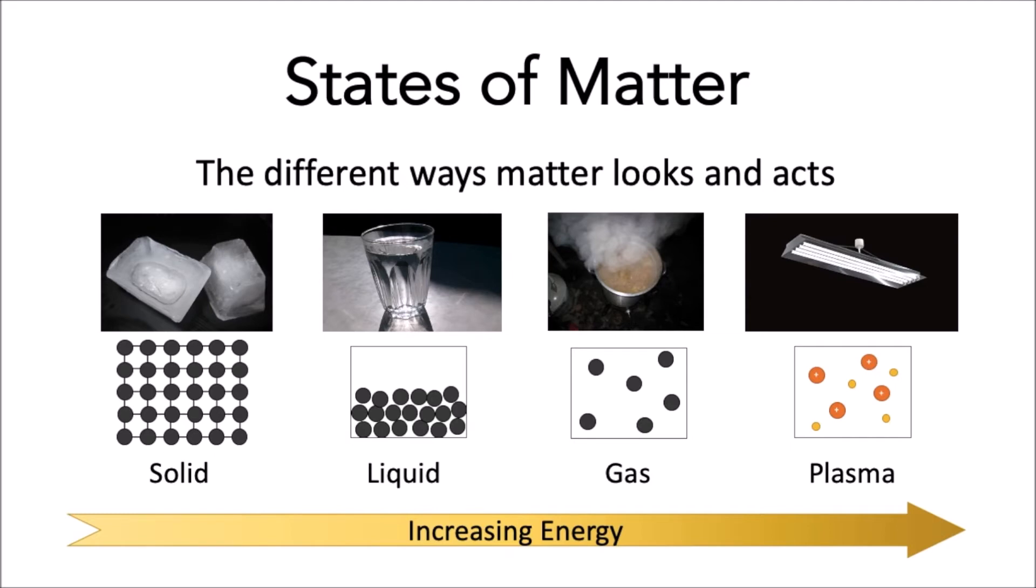An example of plasma is the matter inside of fluorescent light bulbs and neon signs. In nature, plasma is what makes up lightning and stars such as the sun.